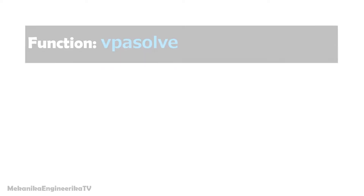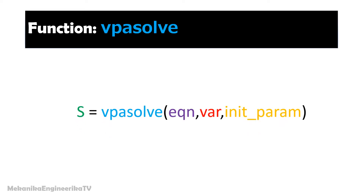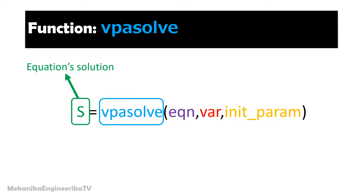There are several ways to solve non-linear equations with MATLAB. Here we will use the function vpasolve. The syntax of the function writes as follows: S is equal to vpasolve with three parameters — eqn, var, and init_param. S is the solution of the equation as solved by the function vpasolve. It is the output of the function. vpasolve is the function name and should be written using lowercase letters.